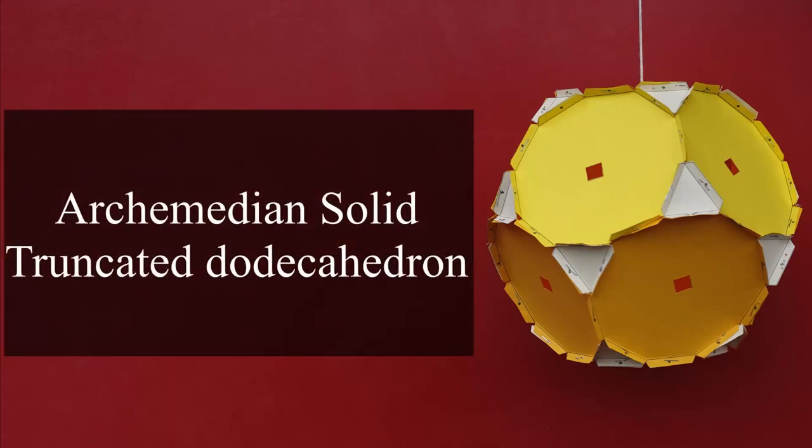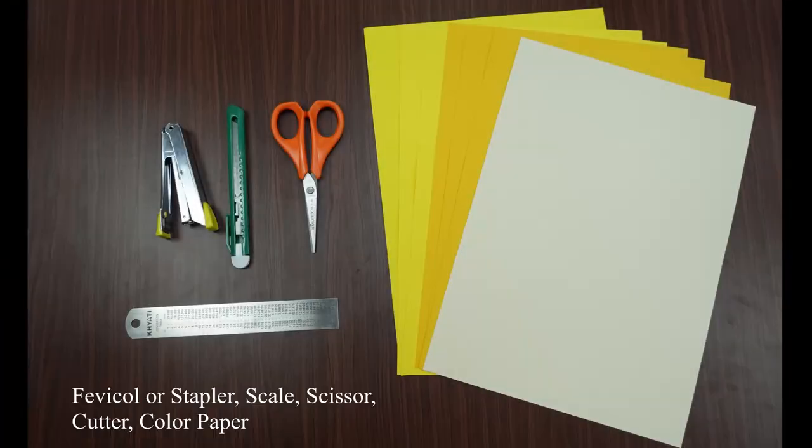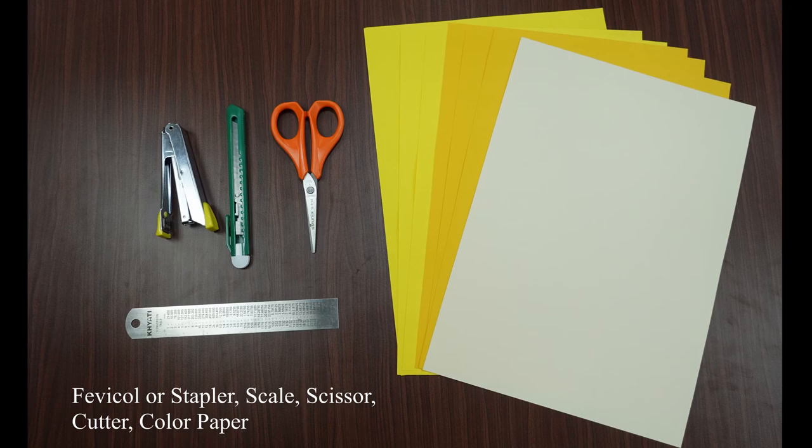Today, we will learn how to make a truncated dodecahedron Archimedean solid. For that, we need some colored paper, scale, glue, scissor, cutter, etc.